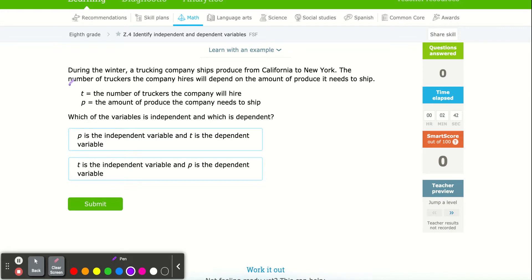So the first thing we need to realize is that in real life, when we relate math to it, we try to use a letter that represents what we're talking about. Since we're talking about the number of truckers, they use T to represent the number of truckers. Since we're also talking about the amount of produce we're shipping, we use P to represent the produce.